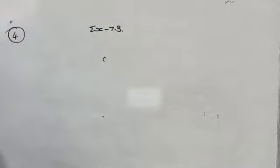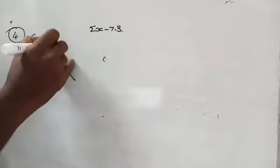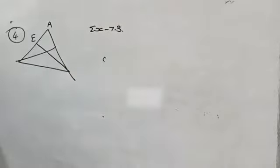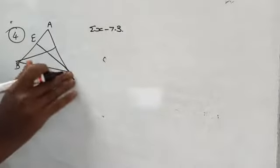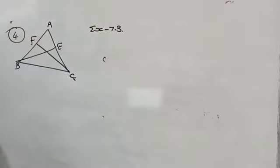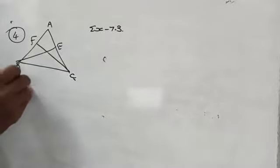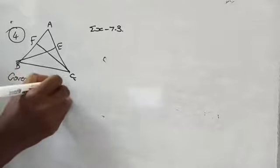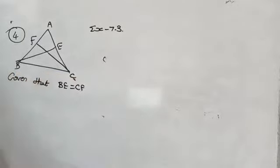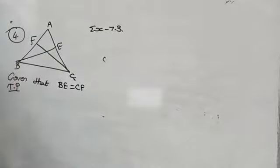It is given that BE and CF. It is a given triangle for you — triangle ABC. BE and CF are two equal altitudes of triangle ABC. Using the RHS congruence rule, prove that triangle ABC is isosceles. Given that BE equal to CF, to prove ABC is an isosceles triangle.